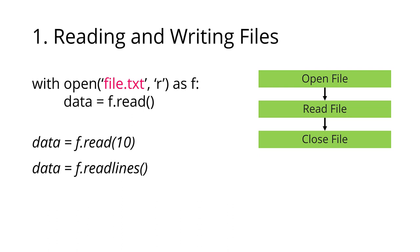In Python, or generally in most programming languages, this is a multi-step process. On our file system, we have a file — for example, file.txt — then we open that file. Just opening the file doesn't do anything. Then we read the file, and we read as much content as we want. After we've done whatever we want to do with the data, we then close the file again.